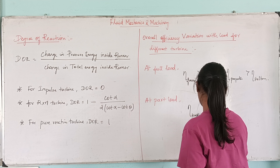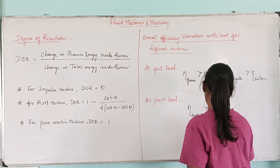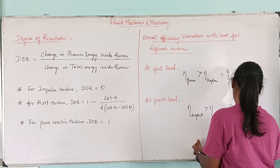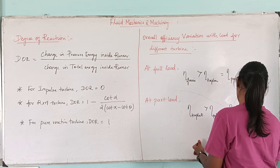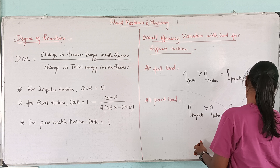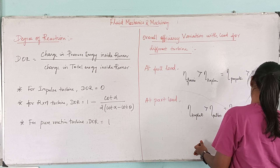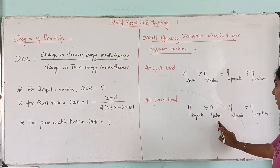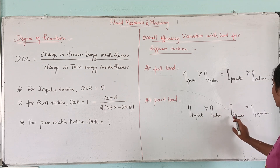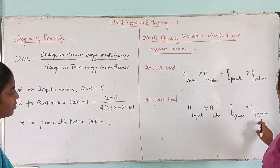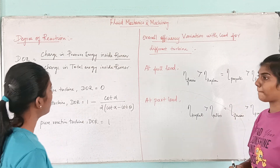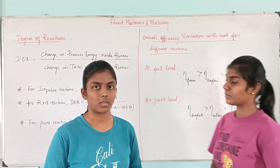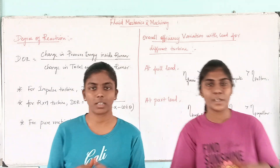At part load: efficiency of Kaplan is greater than efficiency of Pelton, which is equal to efficiency of Francis, and efficiency of Kaplan is greater than Pelton's efficiency equal to Francis's efficiency, which is greater than propeller efficiency. Fluid Mechanics and Machinery is the universal concept for us. Happy Champions! Thanks.